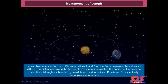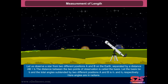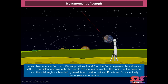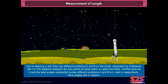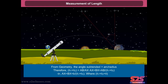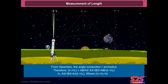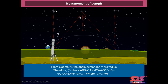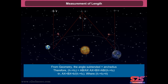The distance between the two points of observation is called the basis. Let the basis be b and the total angles subtended by two different positions A and B be theta 1 and theta 2 respectively, where angles are in radians. From geometry, the angle subtended equals arc divided by radius. Therefore, theta 1 plus theta 2 equals AB divided by AX, giving AX equals BX equals b divided by (theta 1 plus theta 2), where theta 1 plus theta 2 equals theta.